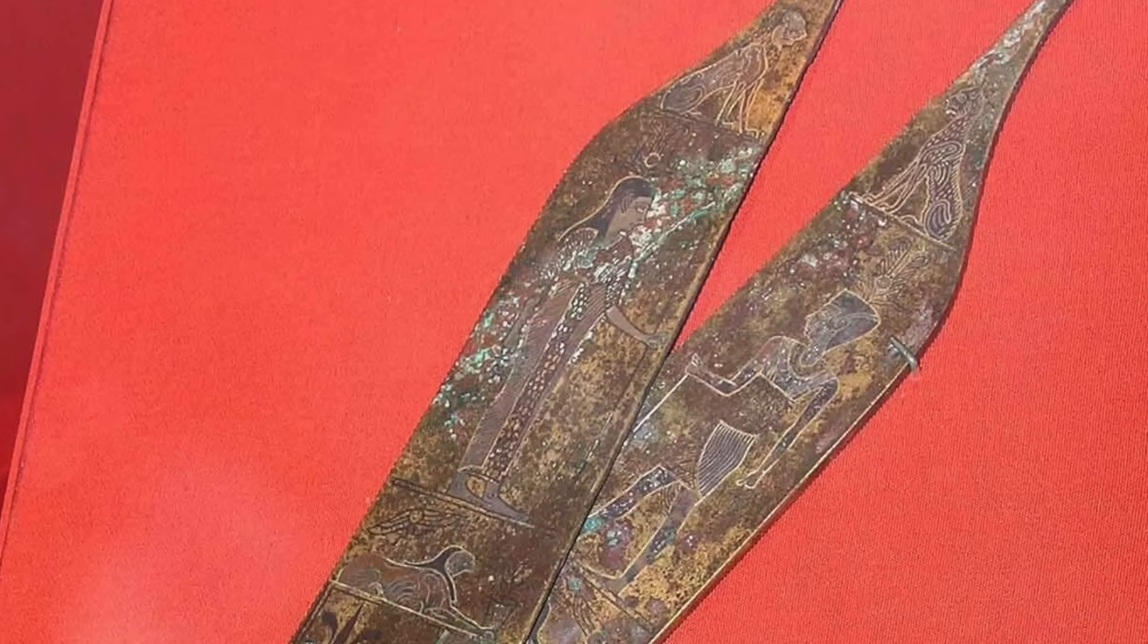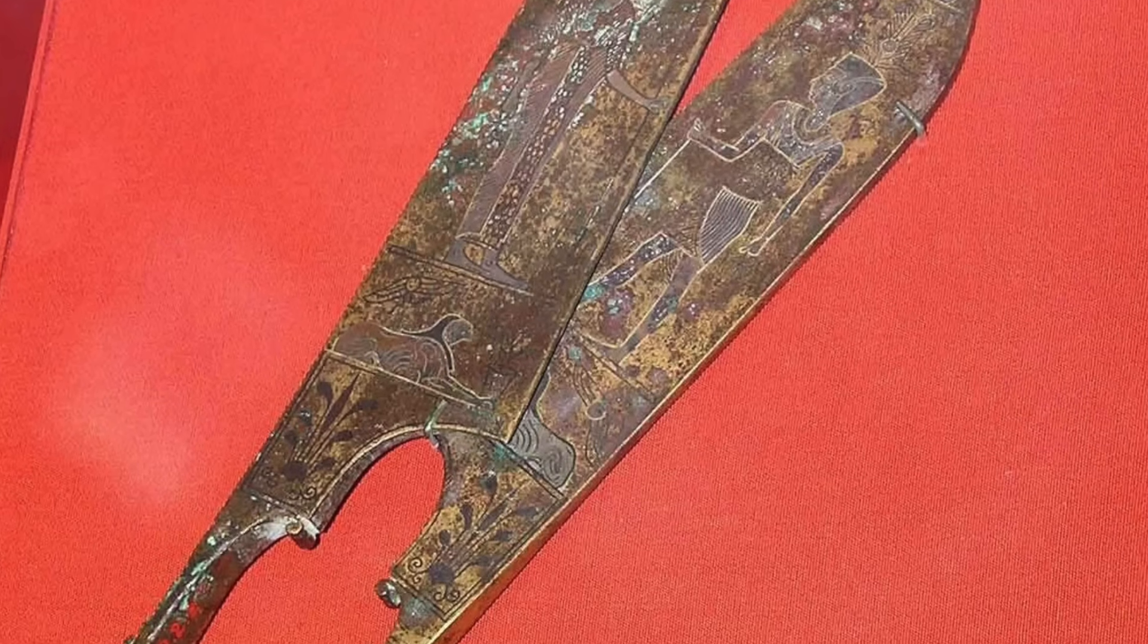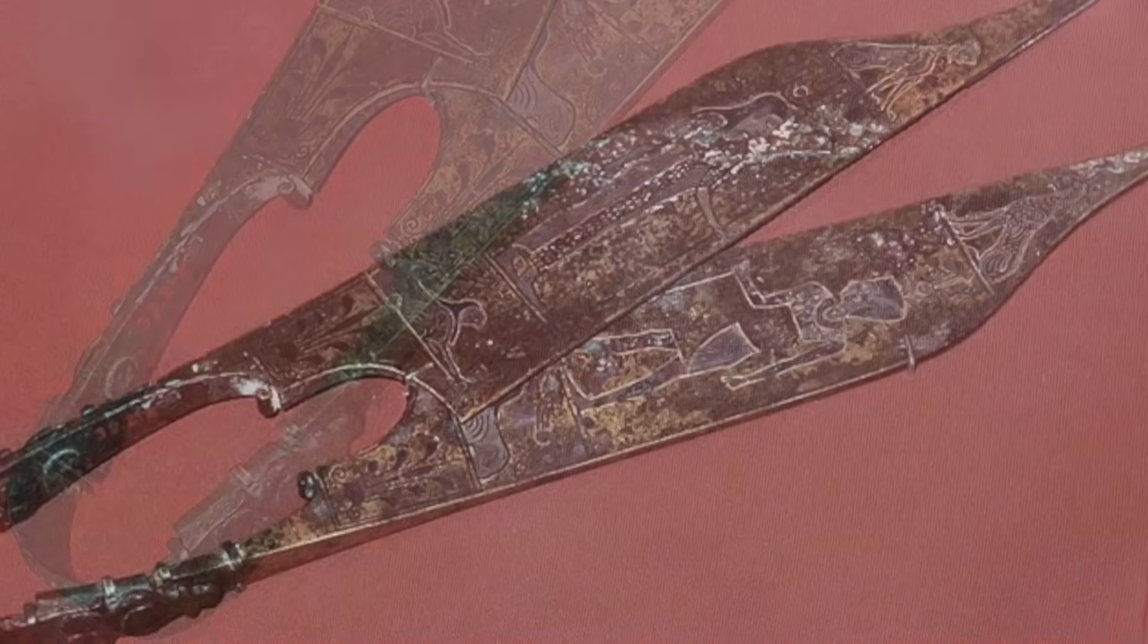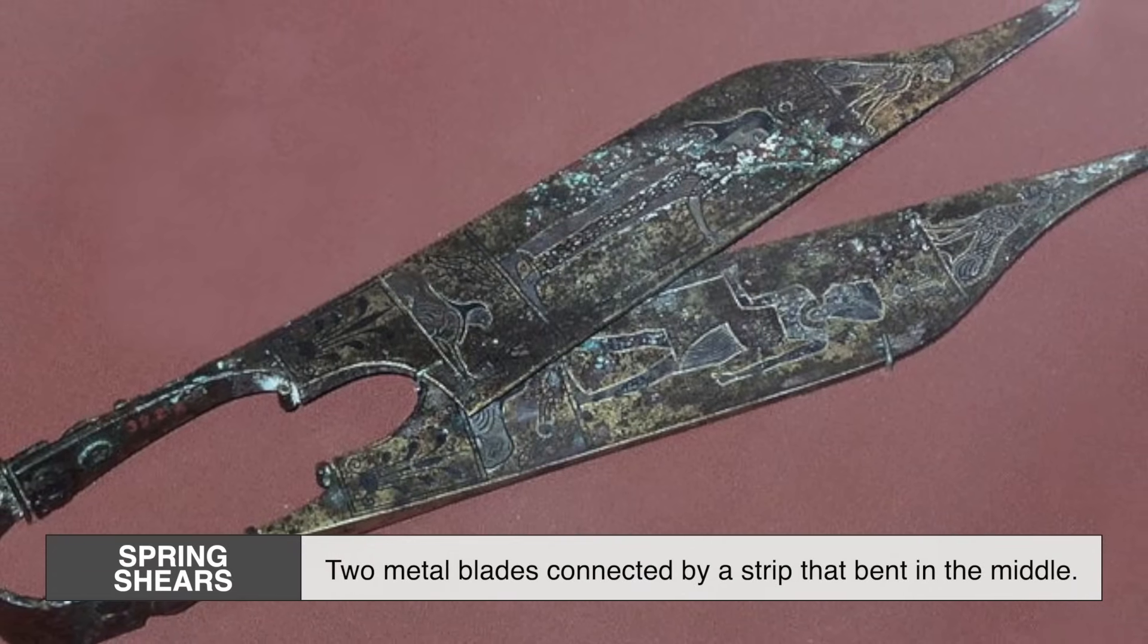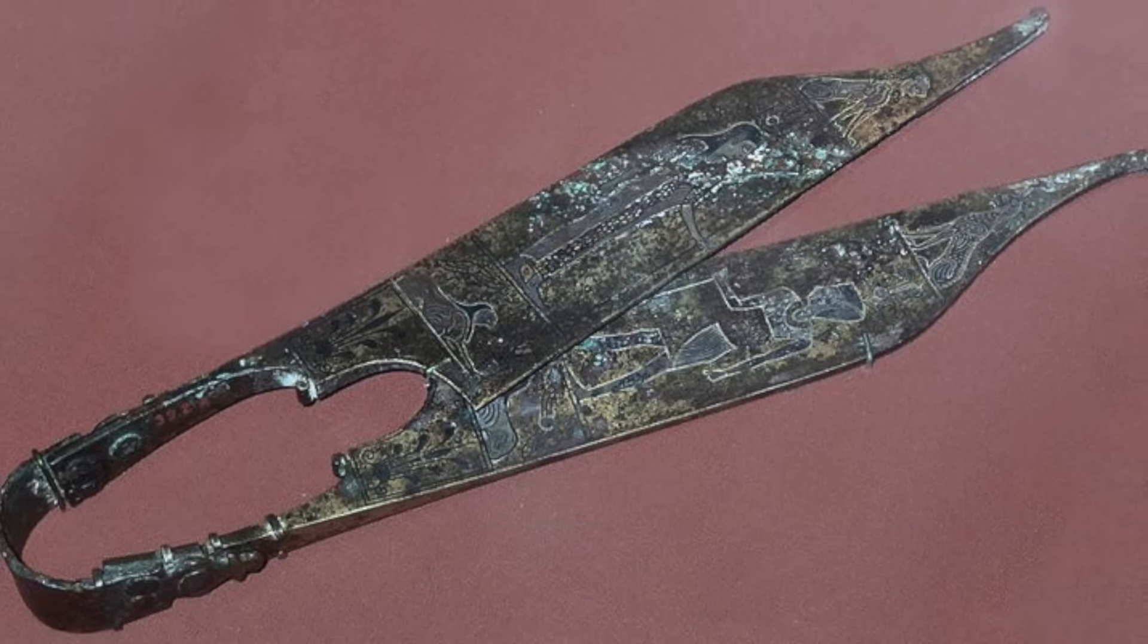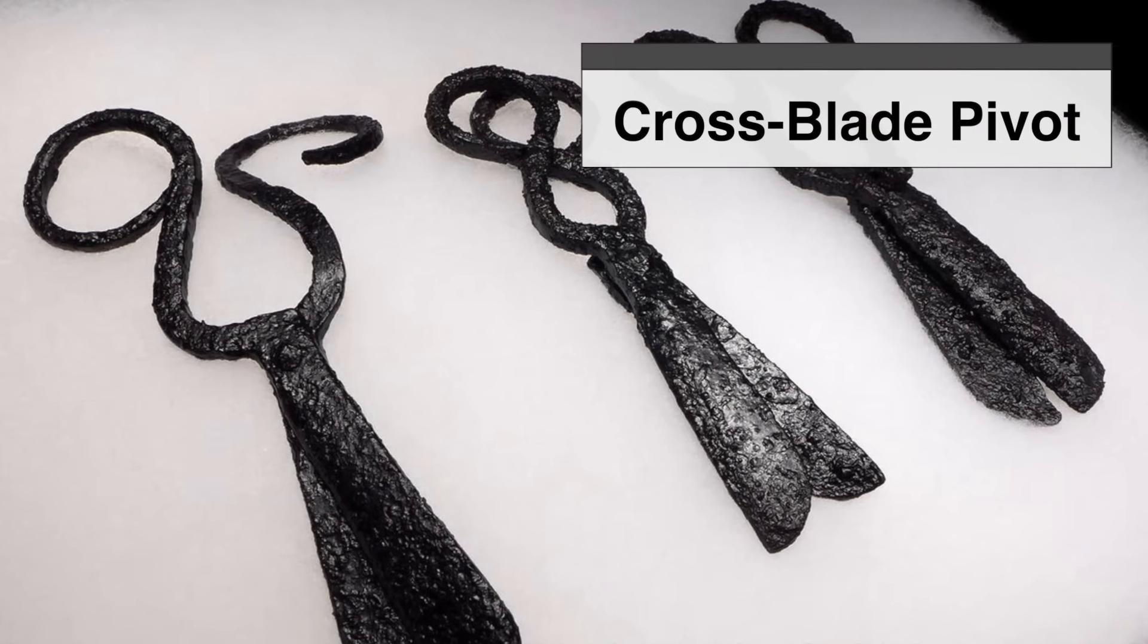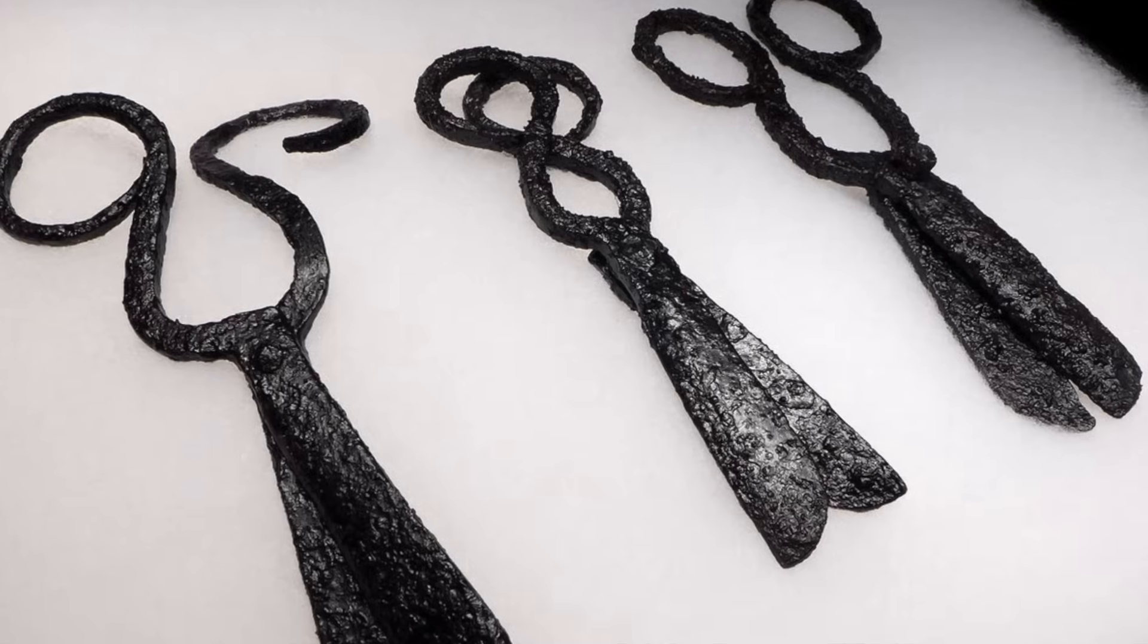Interestingly, this design didn't appear in the earliest scissors. The first scissors, believed to have been developed around 3,000 years ago in ancient Mesopotamia and Egypt, were basically spring shears, two metal blades connected by a strip that bent in the middle. These early tools were symmetrical and used more like tongs than modern scissors. It wasn't until the Romans came along with the cross-blade pivot design around 100 A.D. that scissors began to resemble the ones we know today.